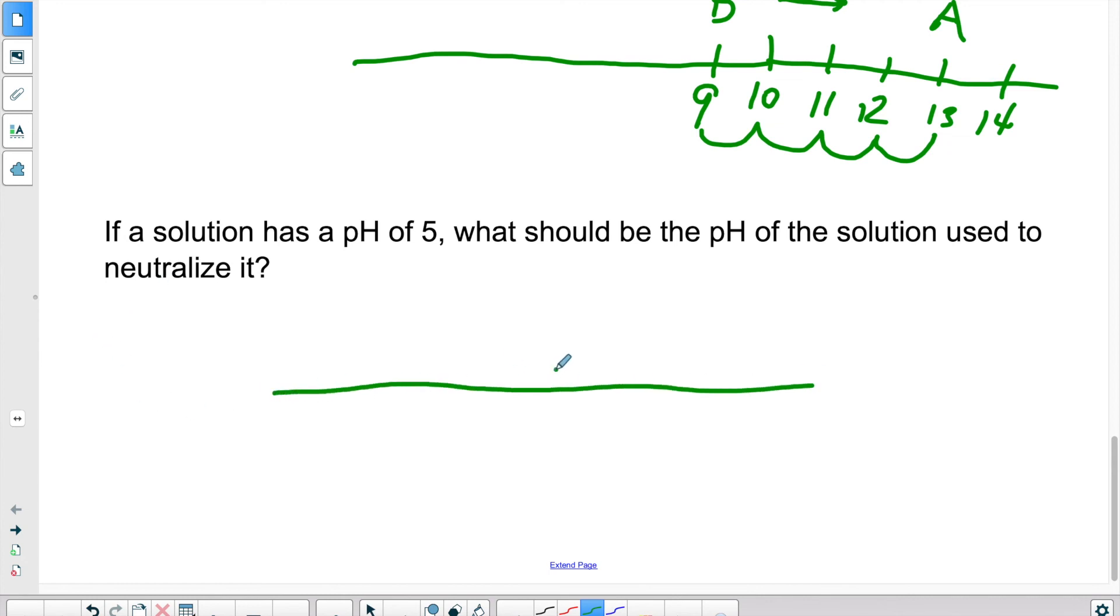If we want to neutralize something, we need to obtain a pH of 7. So my solution has a pH of 5. And I want to neutralize it. So I want to go in that direction. How many values of pH must I cover? I must cover 1 and 2.